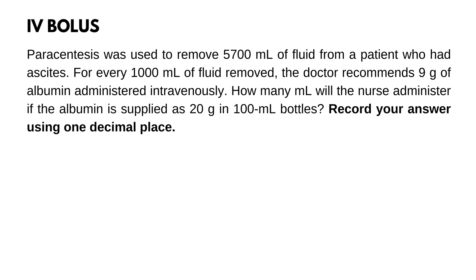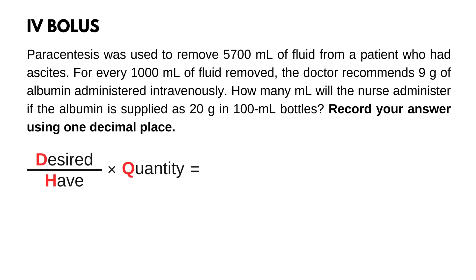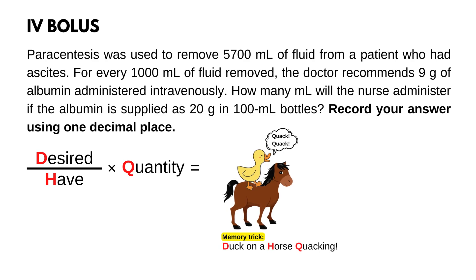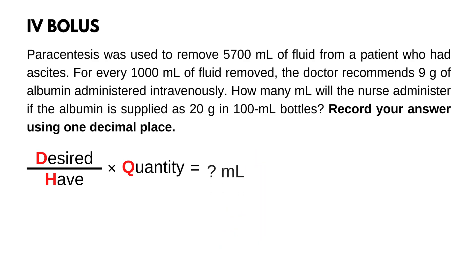The first step is to set up the formula: desired over half times quantity. Use the memory trick to remember it — duck on a horse quacking. Now add the unit answer, mL, because the question is asking how many mL will the nurse administer.